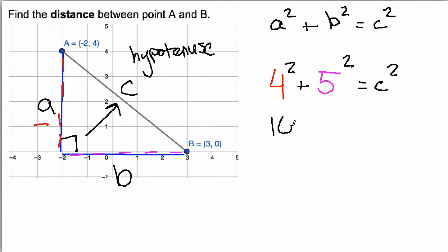4 squared is 4 times 4, which is 16. 5 squared is 5 times 5, which is 25. That equals C squared.